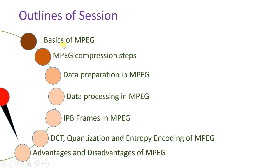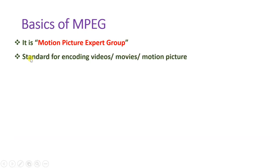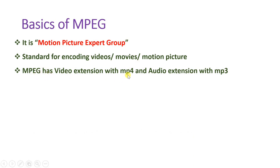Let us begin with the basics of MPEG. The full form is Motion Picture Expert Group, and from that complete name the short initial MPEG has been derived. This standard is utilized for encoding videos, movies, and motion pictures, and is used to reduce the size of video. MPEG has video extension MP4 and audio extension MP3. When you apply the MPEG standard, you get video with the MP4 extension and audio with the MP3 extension.